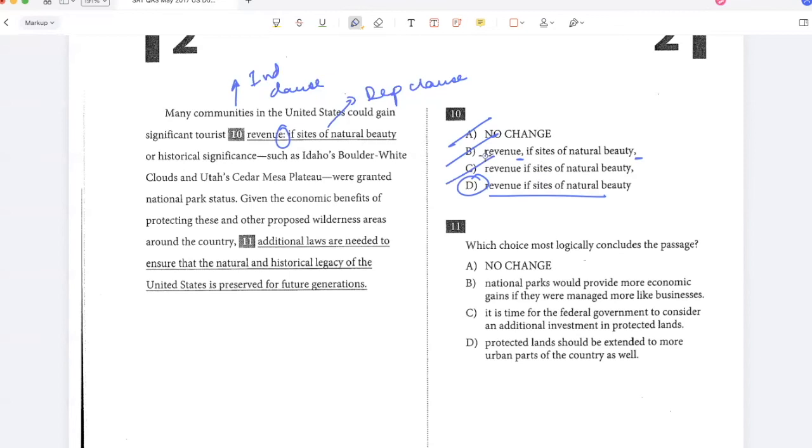Given the economic benefits of protecting these and other proposed wilderness areas around the country, additional laws are needed to ensure that the natural and historical legacy of the US is preserved for future generations. I don't think I'm talking about the natural and historical legacy in the passage. So I don't like A. National parks will provide more economic gains if they were managed like businesses. No, it's not about managing them like businesses. That's not the point of the passage. It is time for the federal government to consider an additional investment in protected lands. Yeah, this is a good answer because the whole passage is about how government spending on national parks would be beneficial to these parks because it would not affect the government budget that much, but it would have a profound impact on the economy. And protected land should be extended to more urban parts of the country as well. No, we're not saying they should be extended to urban parts. So the best answer is C.